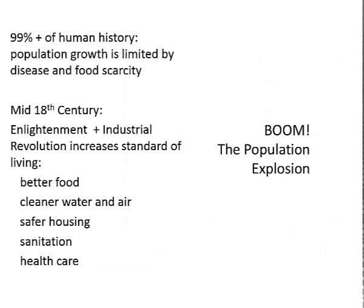The qualitative explanation is that for 99% of human history, population growth was limited by disease and food scarcity, which killed people off. But by the mid-18th century, and certainly into the 19th century, and most strikingly in the 20th century, the Industrial Revolution and the idea of the Enlightenment — the idea of progress — leads to increases in the standard of living: better food, cleaner water and air, safer housing, sanitation, the development of sewers, and health care if you do get sick.